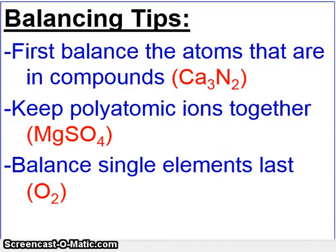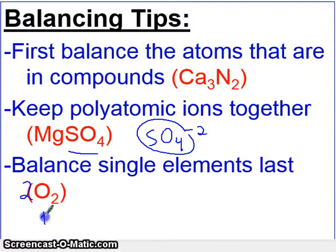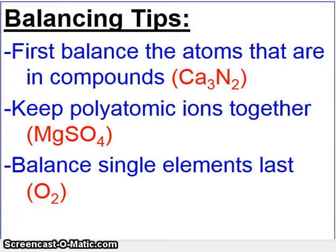Before we try a bunch of examples, here are some balancing tips. First, balance the atoms that are in compounds — try to balance the toughest atom first, the one buried deep inside one of the compounds. If you have polyatomic ions like sulfate SO₄²⁻, keep these together — don't count the sulfur and oxygen separately, just count the sulfate as a whole unit. Balance the single elements last, because you can put any number in front of a single element to adjust it. Really, the way to balance these equations is to practice.